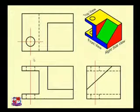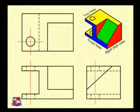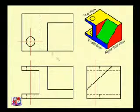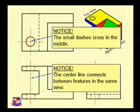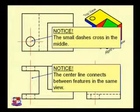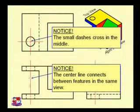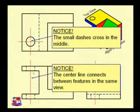The center line should be drawn with a small plus crossing, and then extended. However, for a smaller diameter hole where the diameter is too small, just two full lines should be drawn instead of the center line symbol. The small dashes crossing in the middle must be present. Also note that the center line connects between features in the same view — throughout a full line should not be drawn where no object exists. If a circular hole is present, then that line should be drawn as a center line.